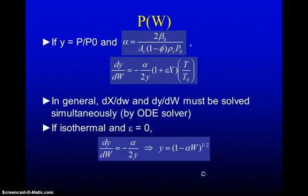If we define Y to be P over P naught and alpha to be this combination of constants that appears at the beginning of the equation, we can say that DY over DW is equal to the opposite of alpha over 2 times Y times 1 plus epsilon X times T over T naught.